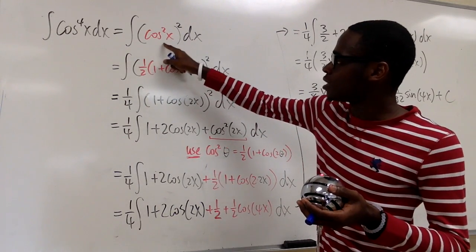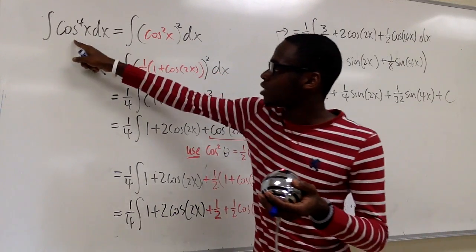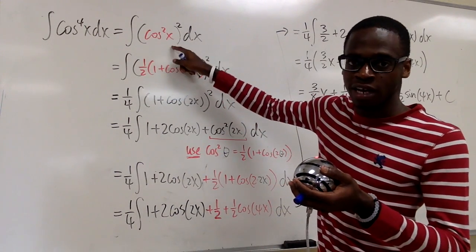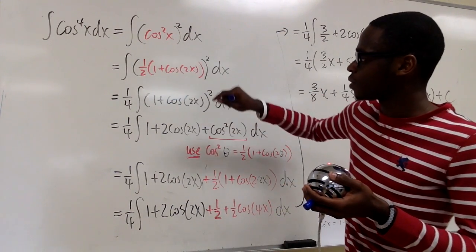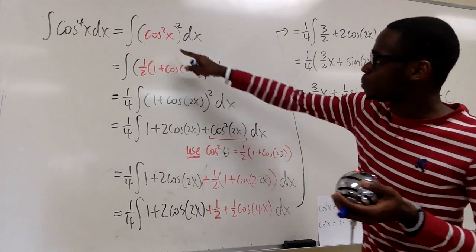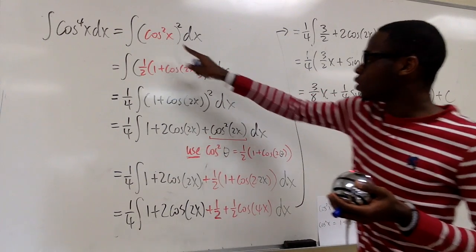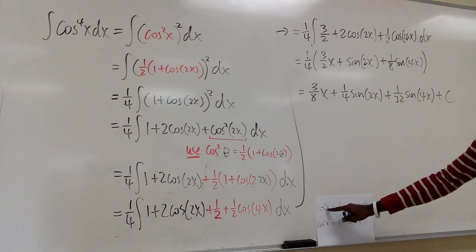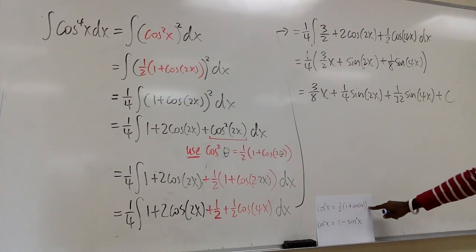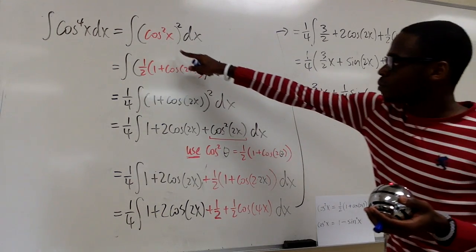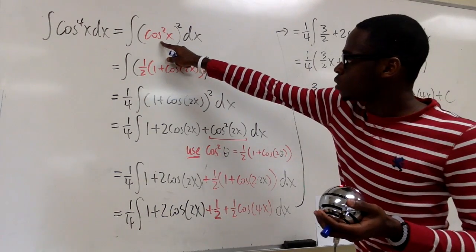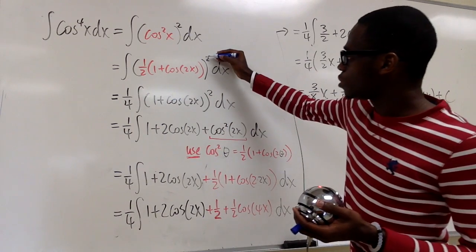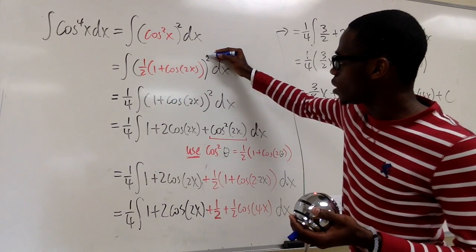First, we want to start by rewriting cosine to the fourth power of x as cosine squared of x, squared. Because it's a square power, we want to use the power reduction formula shown below to replace cosine squared of x.